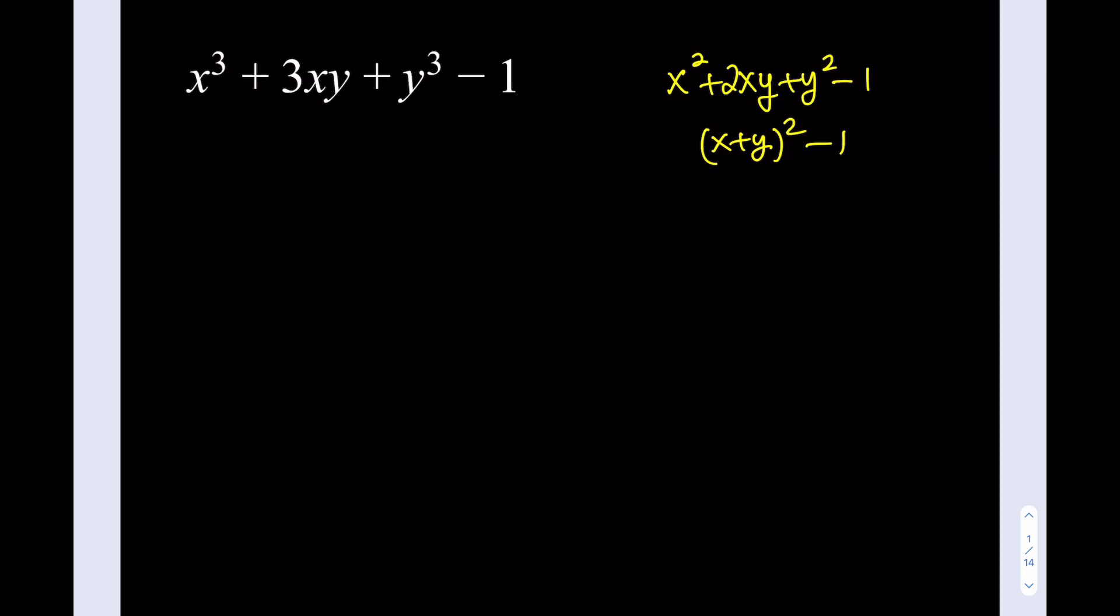So I have x cubed plus 3xy plus y cubed. Now, I don't have 3x squared y or 3xy squared. If I did, then it would be a complete, perfect cube. But I don't have that. The only thing I have is 3xy. So how can I use this information?